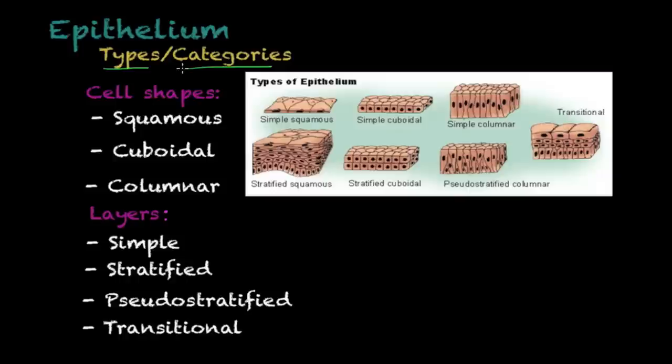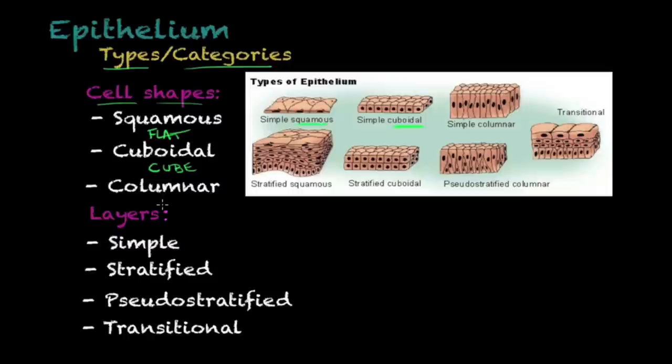Now it is time to talk about the types and categories of epithelium. When you categorize them, you use two criteria. The first is cell shape. The three cell shapes found in epithelial cells are: squamous, also known as flat cells; cuboidal, meaning cells are in the shape of a cube; and columnar, meaning cells are in the shape of a long column. These are the three cell shapes found in epithelium.